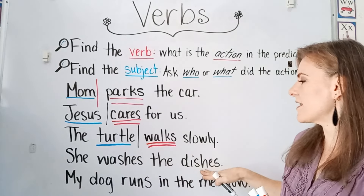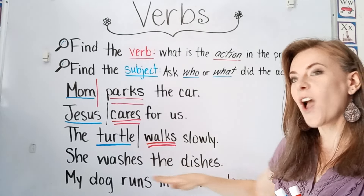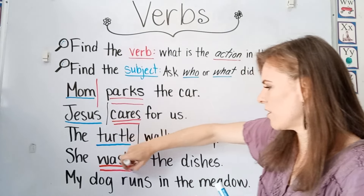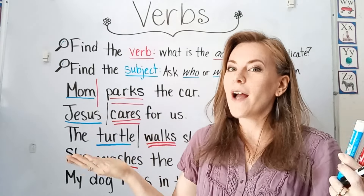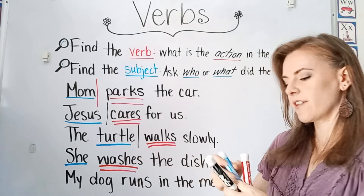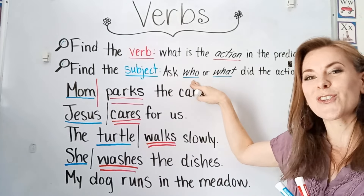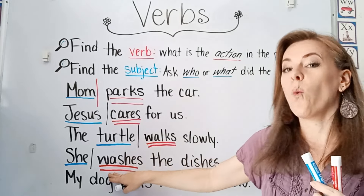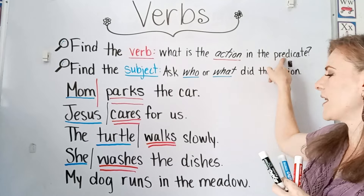She washes the dishes. So what is the action being done in our predicate part of the sentence? Washes. Washes is our verb — it's the action being done, washing the dishes. But who or what washes the dishes? She. She is our subject. So we know she is our subject because it answers the question who or what, and the action being done in the predicate is washes.